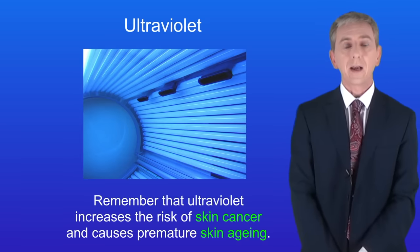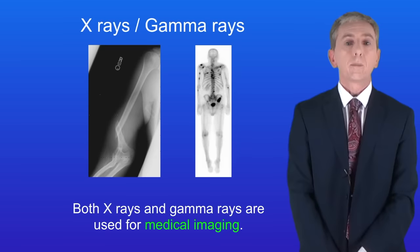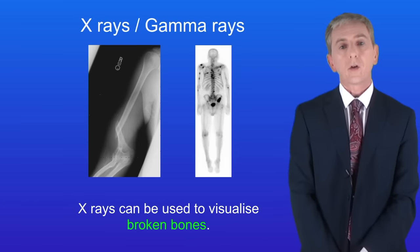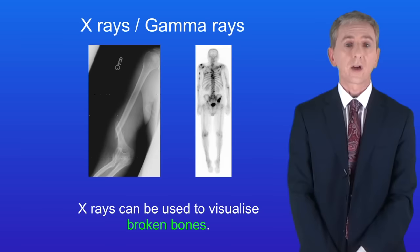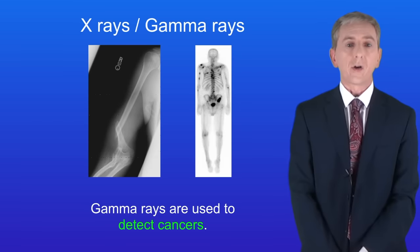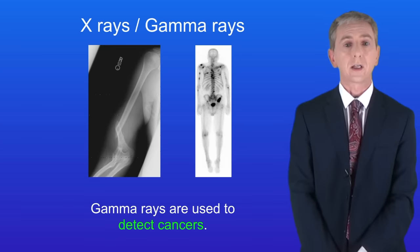Okay let's finish now by looking at x-rays and gamma rays. Both x-rays and gamma rays are used for medical imaging. For example x-rays can be used to visualise broken bones. Gamma rays are used to detect cancers and we saw that in the videos on radioactivity.